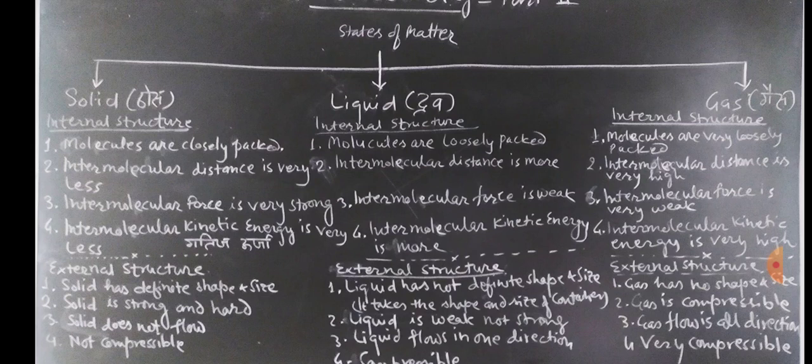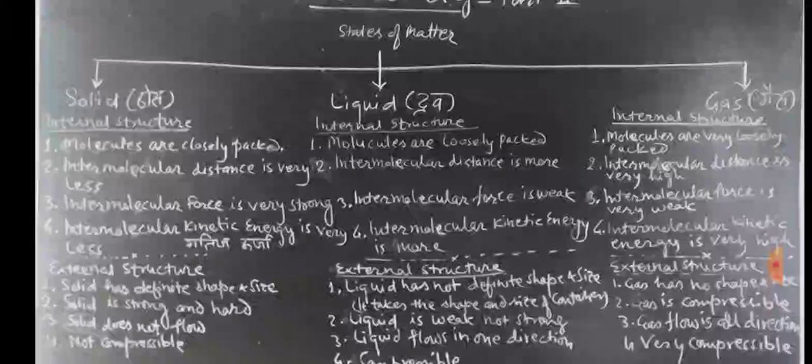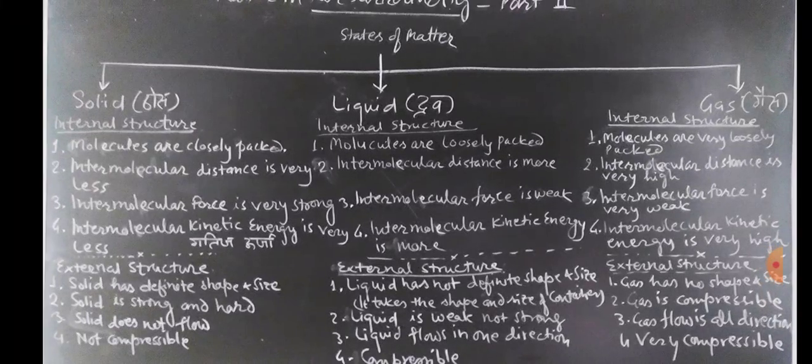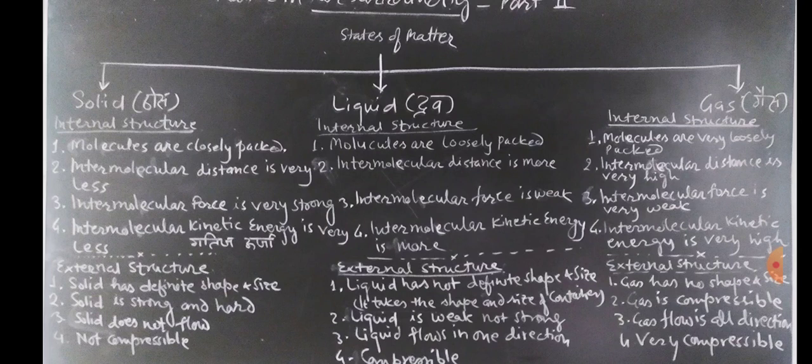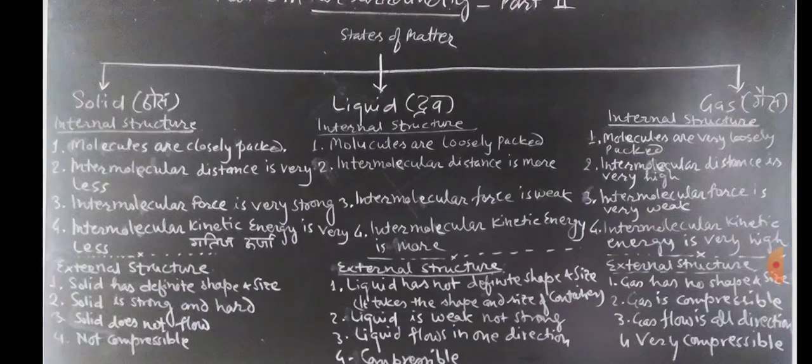So, what are the external or the apparent differences in the liquid? The liquid has no definite shape and size. It takes the shape and size of the container. Liquid is weak, not strong. Liquid flows in one direction and is compressible.